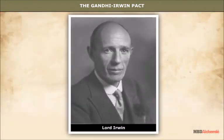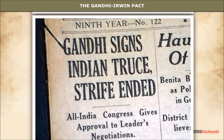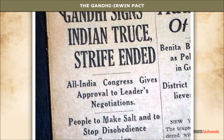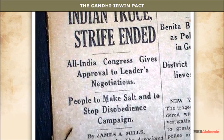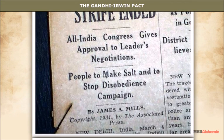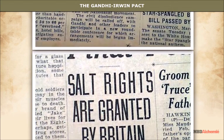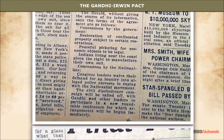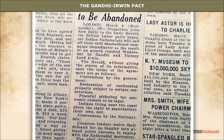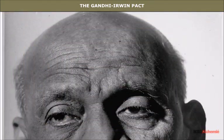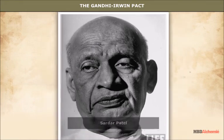The Gandhi-Irwin Pact: Efforts for mediation with the Congress continued, and Gandhiji was invited to meet Lord Irwin, the then Governor-General of India. Lord Irwin unconditionally lifted the ban on the Congress and released Gandhiji and other members of the Congress Working Committee. The Gandhi-Irwin Pact was signed on March 5th, 1931. As per this pact, the civil disobedience movement was to be suspended. The pact was approved by the Congress in its Karachi session held under the presidentship of Sardar Patel.